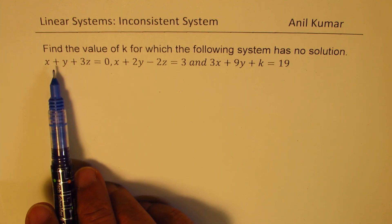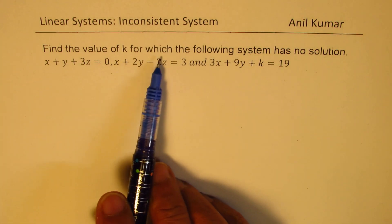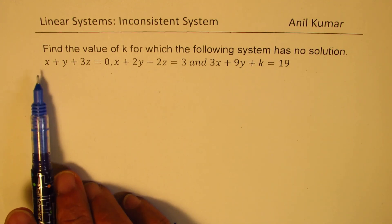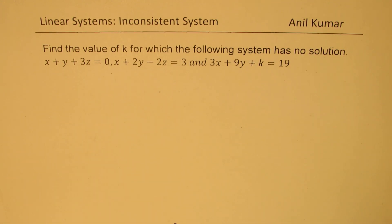The question here is find the value of k for which the following system has no solution: x plus y plus 3z equals 0, x plus 2y minus 2z equals 3, and 3x plus 9y plus k equals 19.